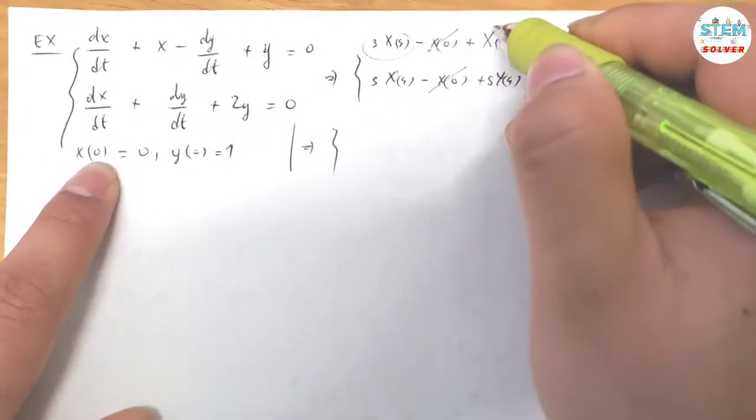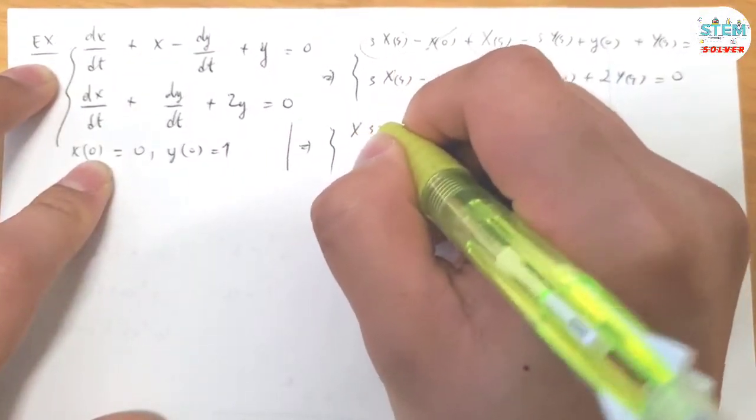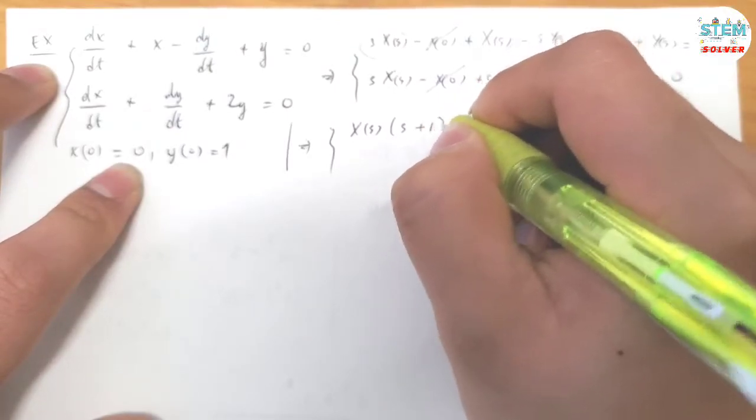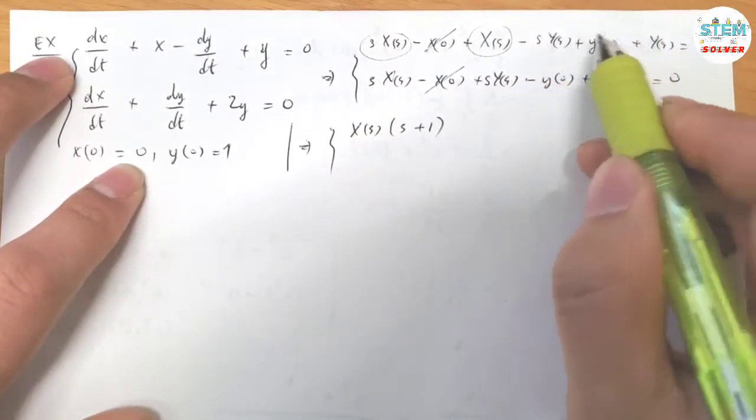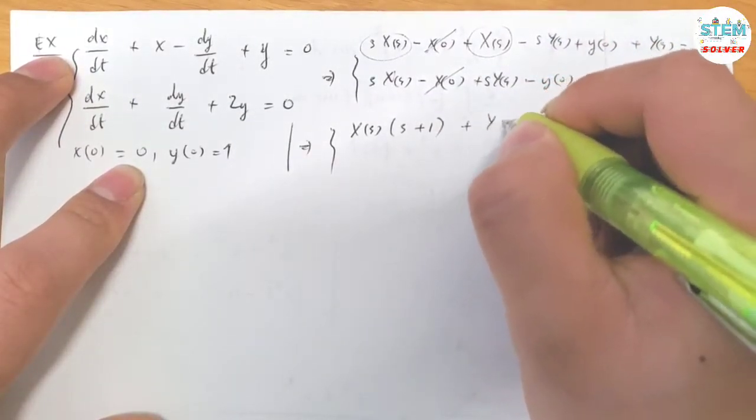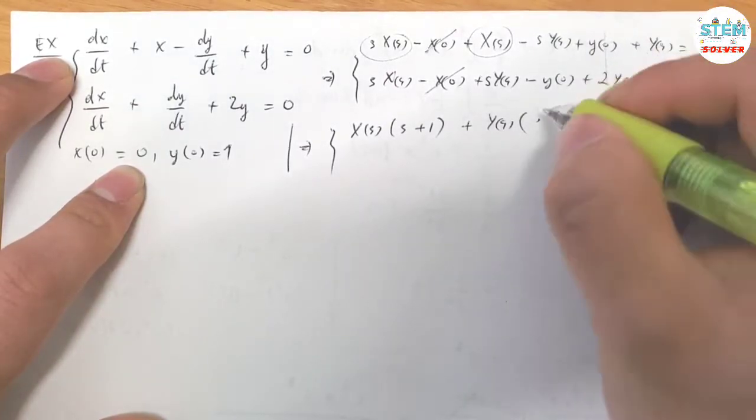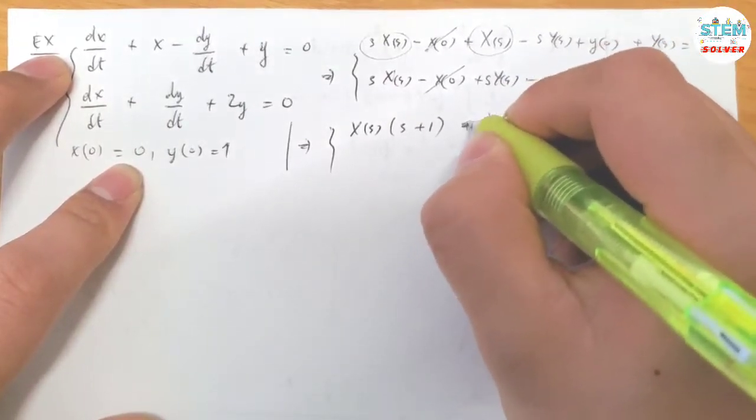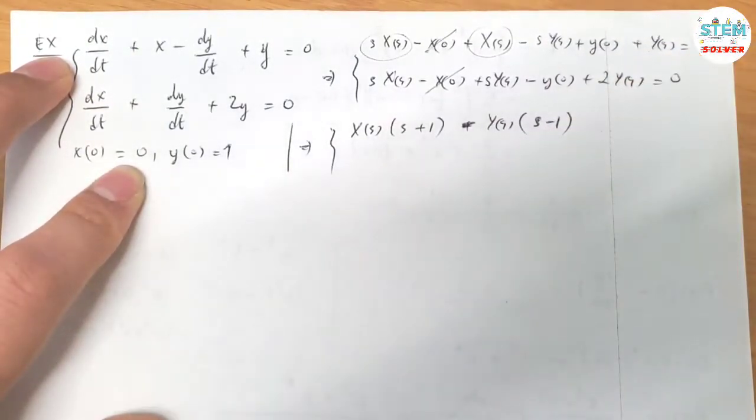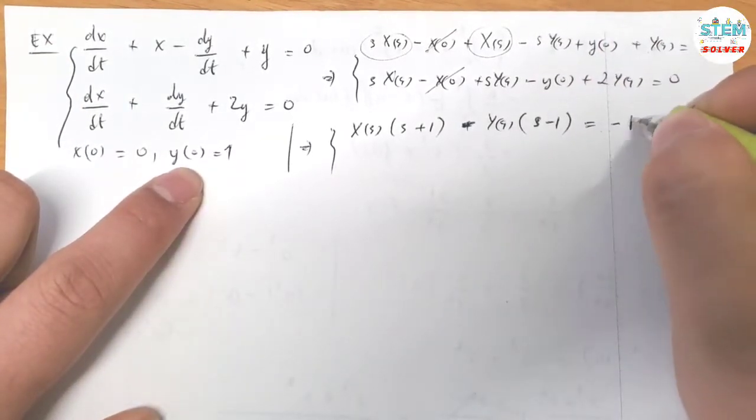Let's see. Combine this together. I have X times (S plus 1). Factor capital Y(s) out. I have S minus 1 equals negative Y(0), and Y(0) equals 1, so I have negative 1.